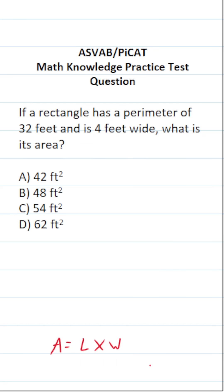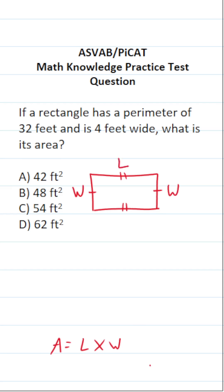Let's take a step back and talk about some general properties of rectangles. You should know that the width on one side of this rectangle is equal to the width on the opposite side, and likewise this length is equal to the opposite length. If it's helpful, you can label these accordingly — width, width, length, and length.